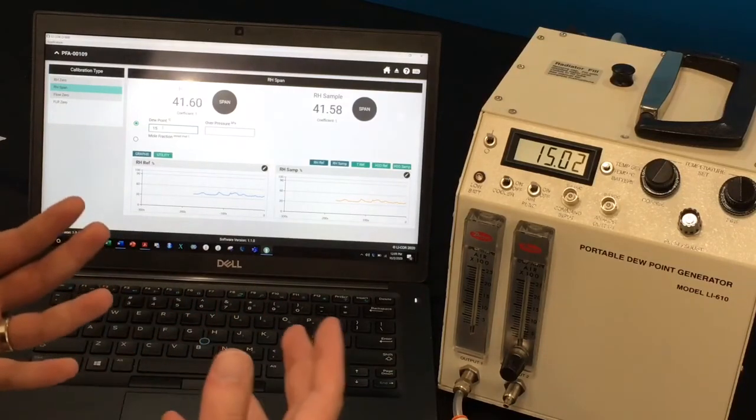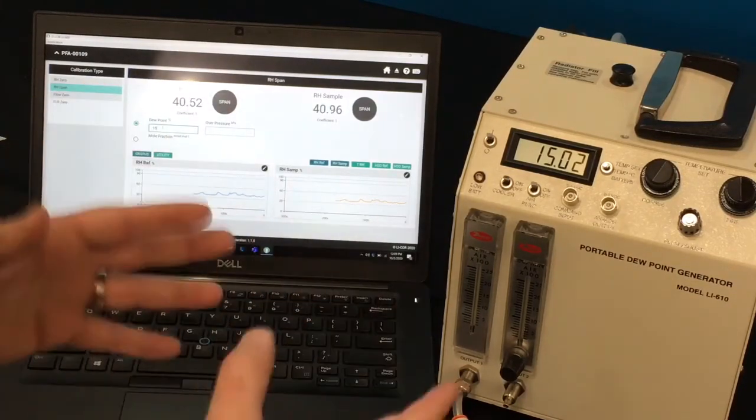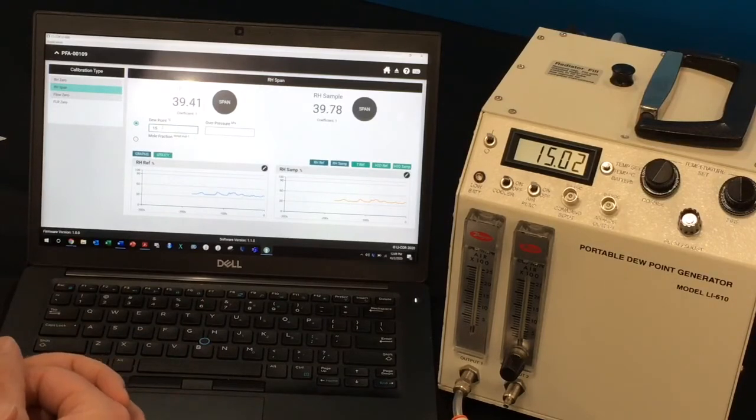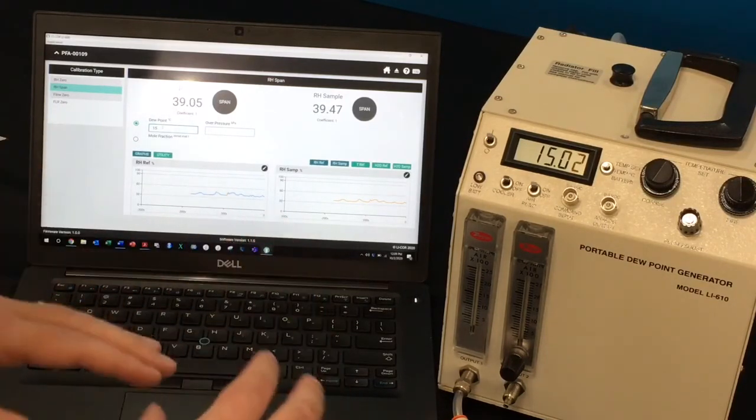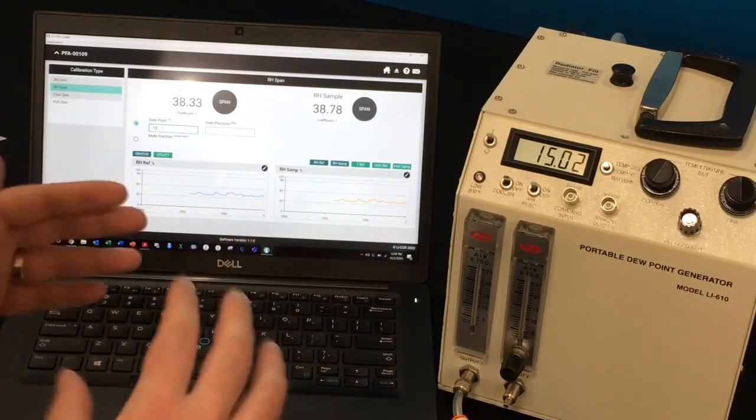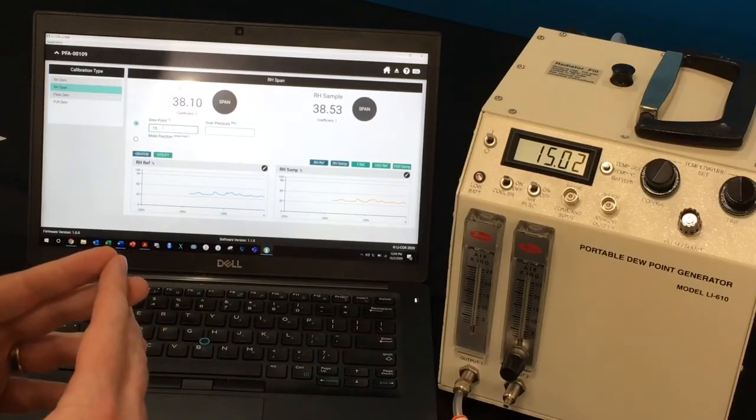Once you've finished the span calibration, you can disconnect the instruments, replace the calibration clamp with the leaf clamp, and you're ready to make measurements.